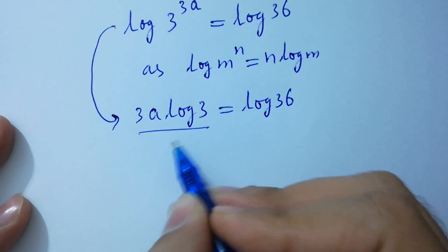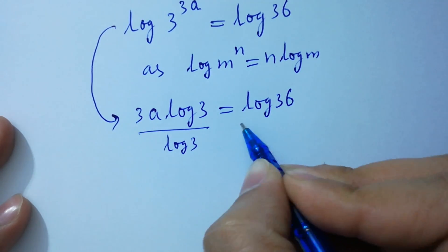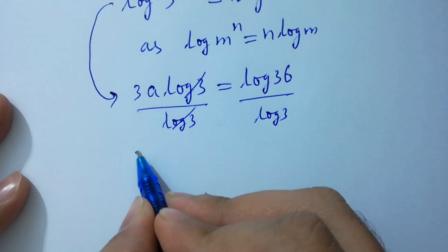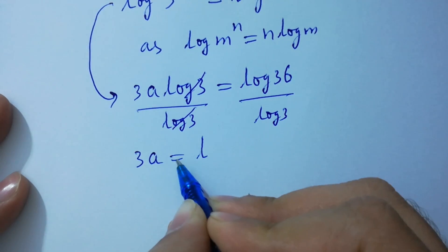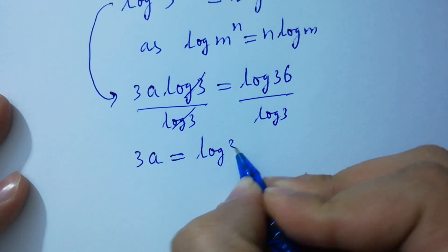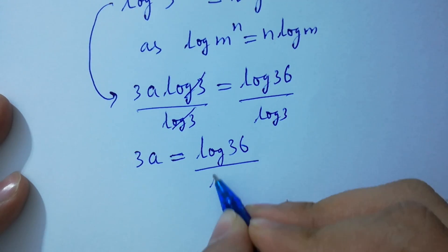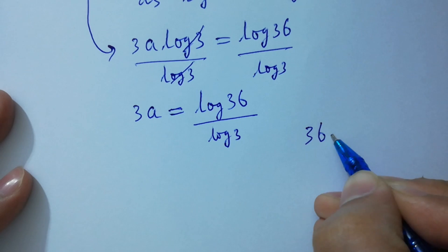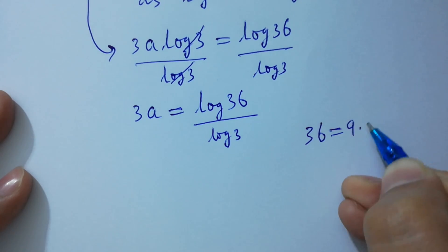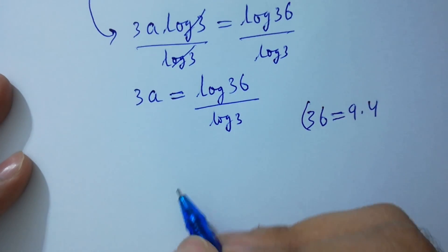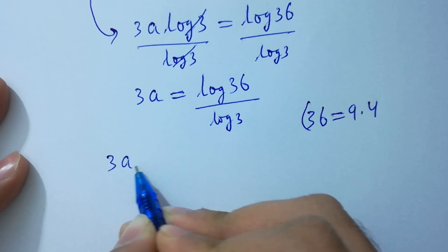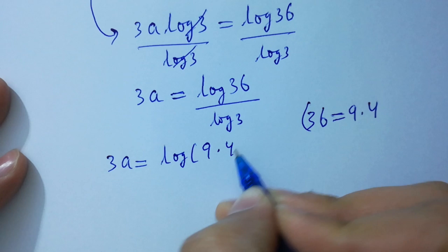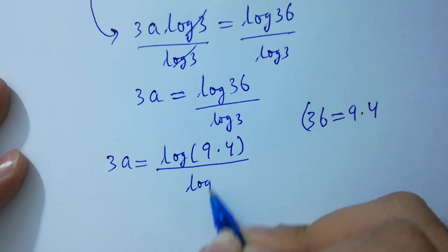Divide by log 3 on both sides; log 3 and log 3 cancel. So 3a equals log 36 over log 3. Since 36 equals 9 times 4, 3a equals log(9 times 4) over log 3.